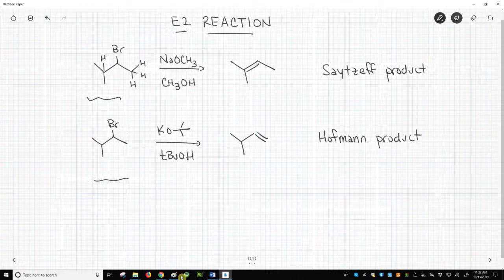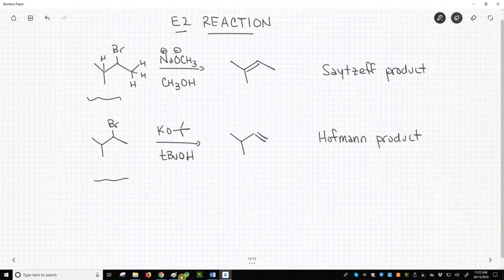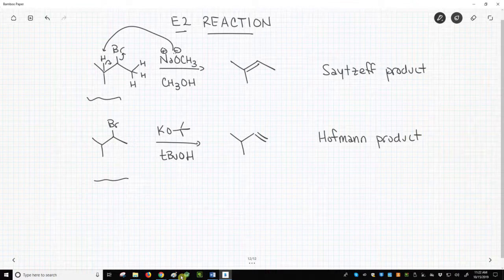Then, for an alkoxide like methoxide, we remove the more hindered beta-hydrogen and get the Saytzeff product, the more highly substituted alkene.